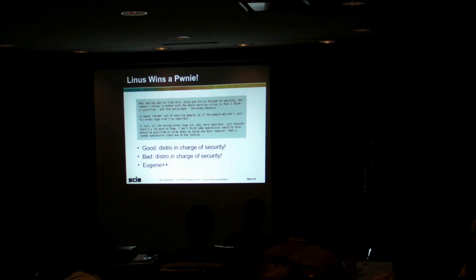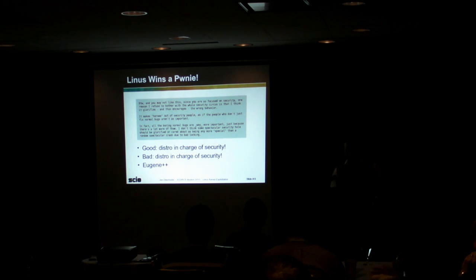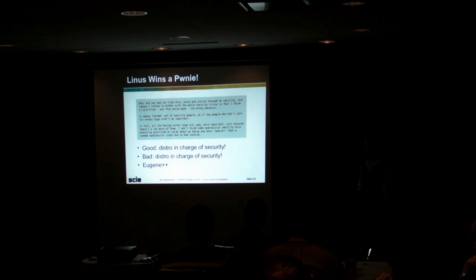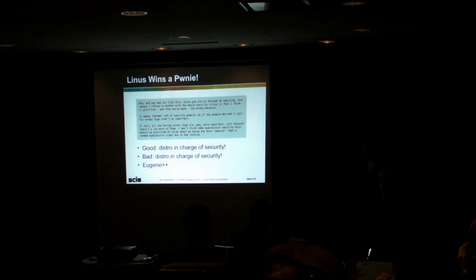The title of this talk relates back to the pony that Linus — and Linux in general — won last year at the Black Hat and DEF CON conference. There were multiple ponies: one was 'lamest vendor response,' which was a clinch for Linux last year. And one of the UDEV bugs, which was essentially universal across all distributions and all versions, won for best local bug — a Linux privilege escalation. So if you look at this quote, there are a few key items. This is a quote from Linus on LKML talking about how normal bugs are way more important than security bugs, simply because there are more normal bugs than security bugs.